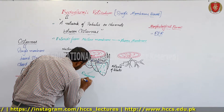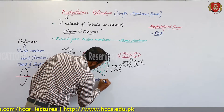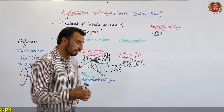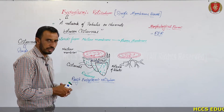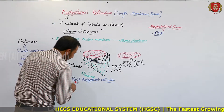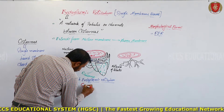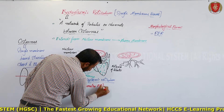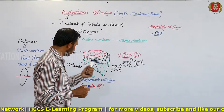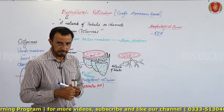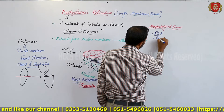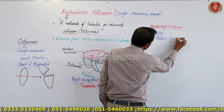The portion of endoplasmic reticulum that has ribosomes attached is called Rough Endoplasmic Reticulum, also known as Granular Endoplasmic Reticulum. Because ribosomes are present on its surface and their main function is protein synthesis, the Rough ER is related to protein synthesis.